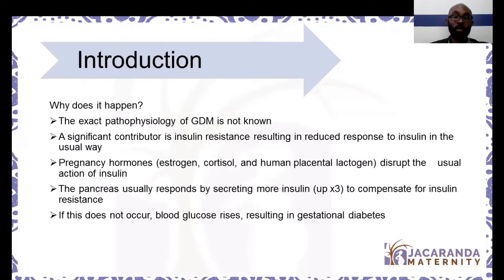Why do people end up developing gestational diabetes? The exact cause is not known. However, there is a significant contribution from insulin resistance. This tends to happen in pregnancy because of hormones that elevate during pregnancy — most especially human placental lactogen, cortisol, and estrogen. As these pregnancy-associated hormones rise, they tend to disrupt the action of insulin on the receptor, making it less effective. That situation is known as insulin resistance.